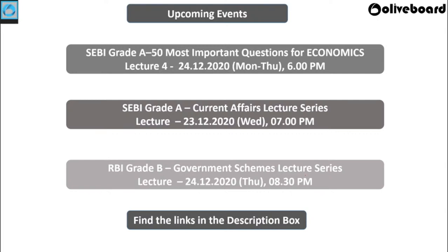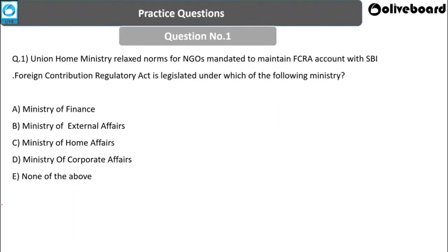Great! Please make a note of our upcoming events on Oliveboard. One is the revision series covering the 50 most important questions for the economics section, continuing till Thursday at 6 PM. We also have this current affairs lecture series for SEBI Grade and the government scheme lecture series for RBI Grade B every Thursday at 8:30 PM. You'll find all links in the description box below.